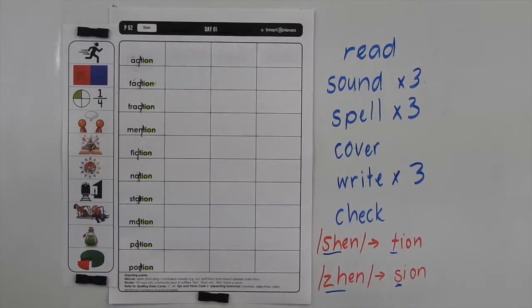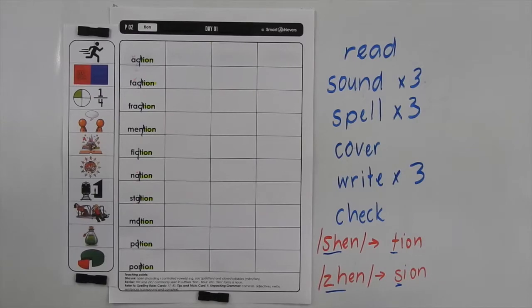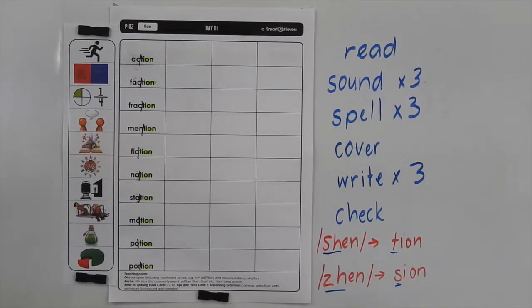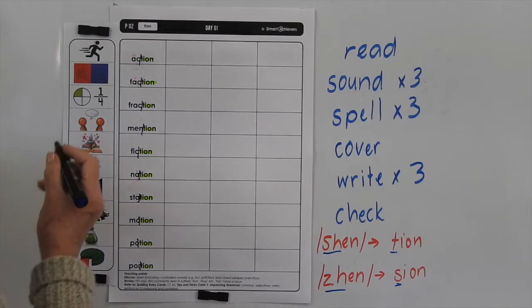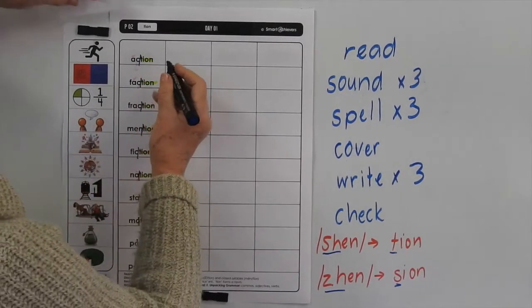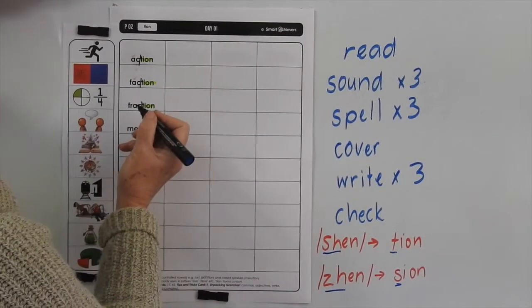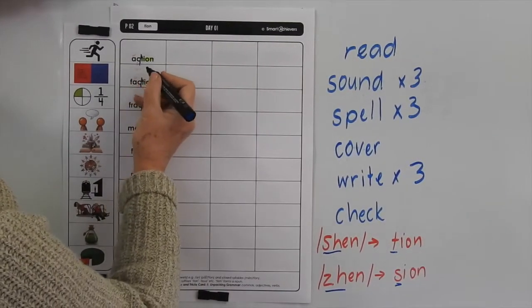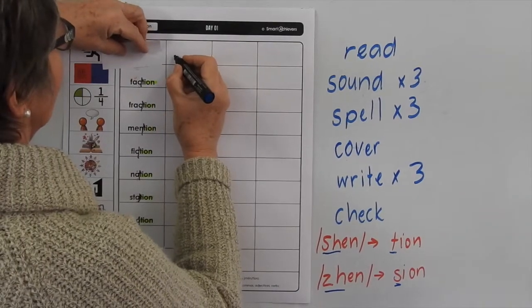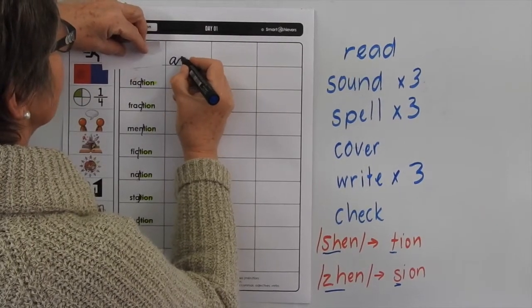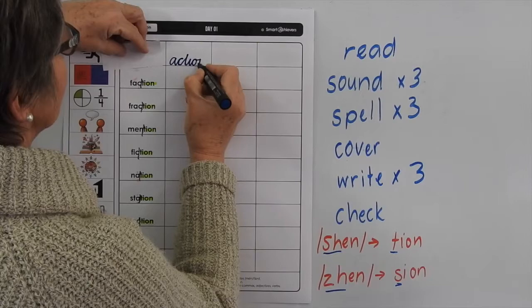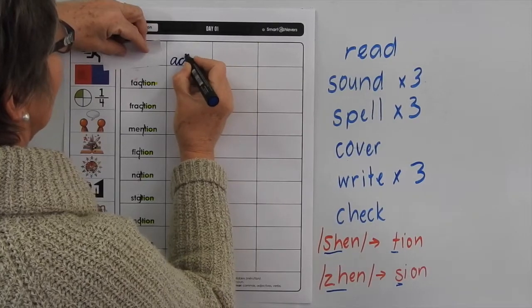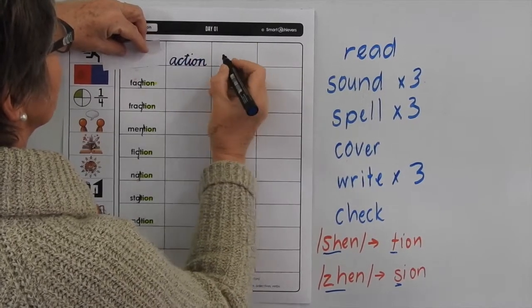So we've got 'action'. Action — A, C, T, I, O, N. Write it three times in your best running writing. Then go back, cross your T, dot your I.